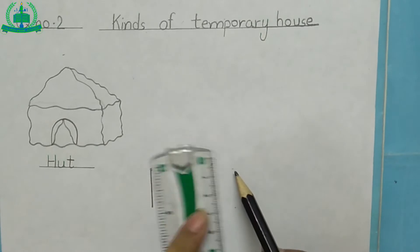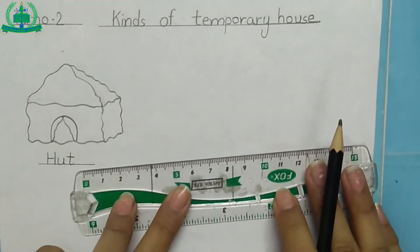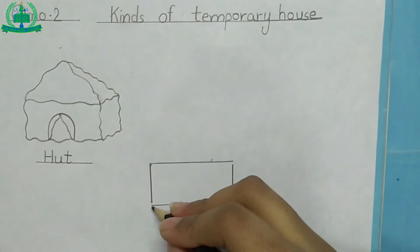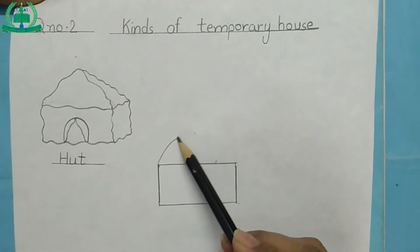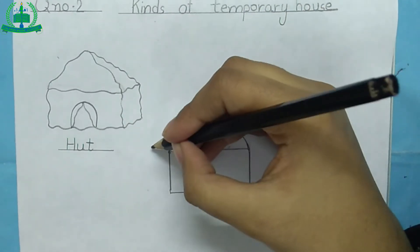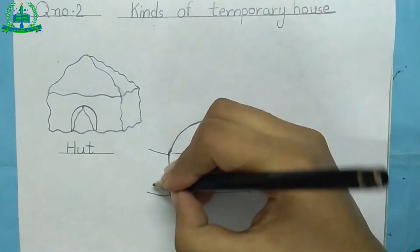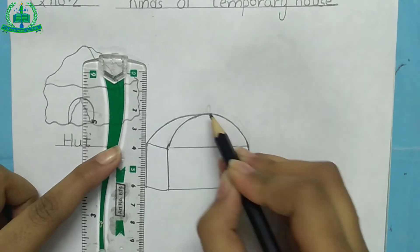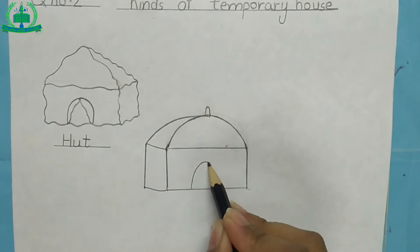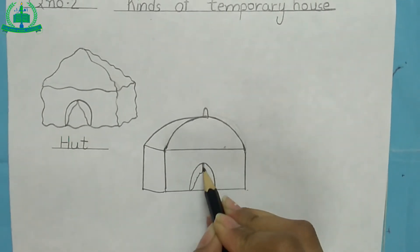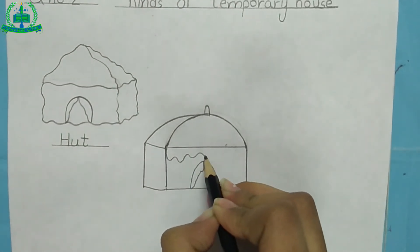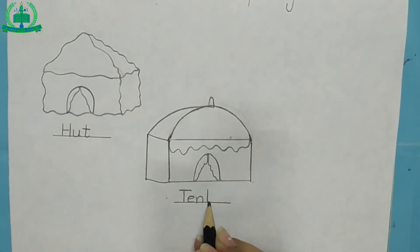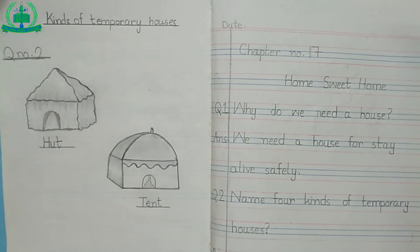First make a rectangle, then make a half circle. Now make 2 small lines and join both sides. Now draw a door. Tent is an example of a temporary house. Hut and tent are kinds of temporary houses.